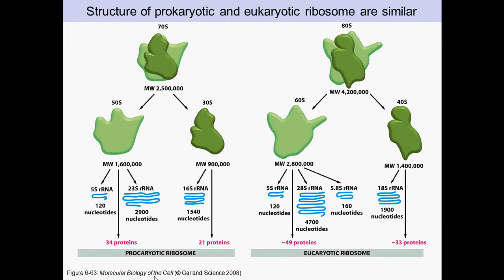In prokaryotes, the ribosomal RNA sizes are 5S, 23S, and 16S. The small subunit has 21 proteins in addition to the 16S RNA, and the large subunit has 34 proteins along with the two ribosomal RNAs — 5S and 23S.